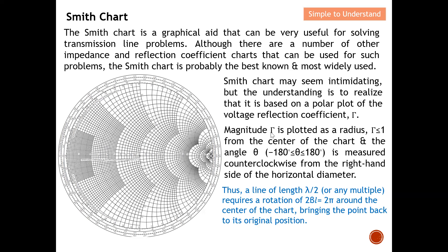The magnitude of the reflection coefficient is plotted as a radius, meaning we draw a circle. The magnitude of the reflection coefficient must be less than or equal to one — it cannot exceed one. The circles are centered at the chart's center, and the angle ranges from -180° to +180°, starting from the right-hand side going up to +180° and down to -180°.